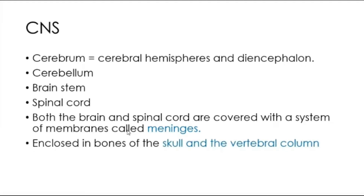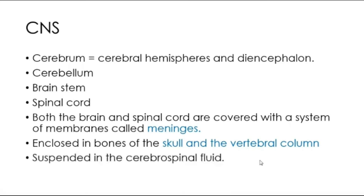The bones of the skull and the vertebral column enclose the brain and spinal cord. The skull basically encloses or completely contains the brain, which includes the cerebrum, cerebellum, and brain stem, whereas the vertebral column contains the spinal cord.